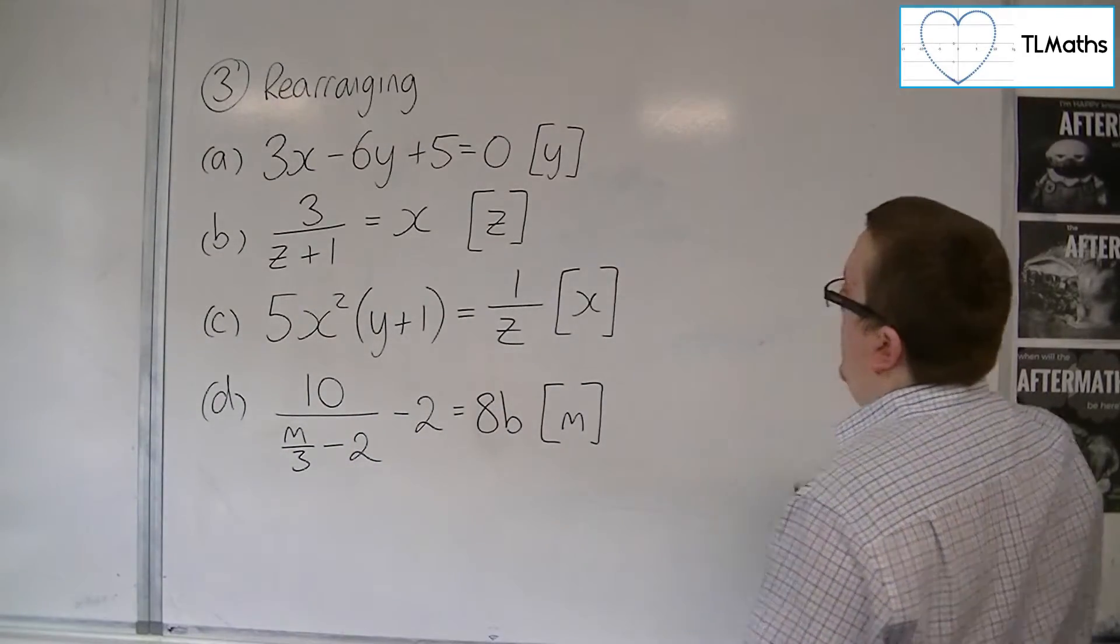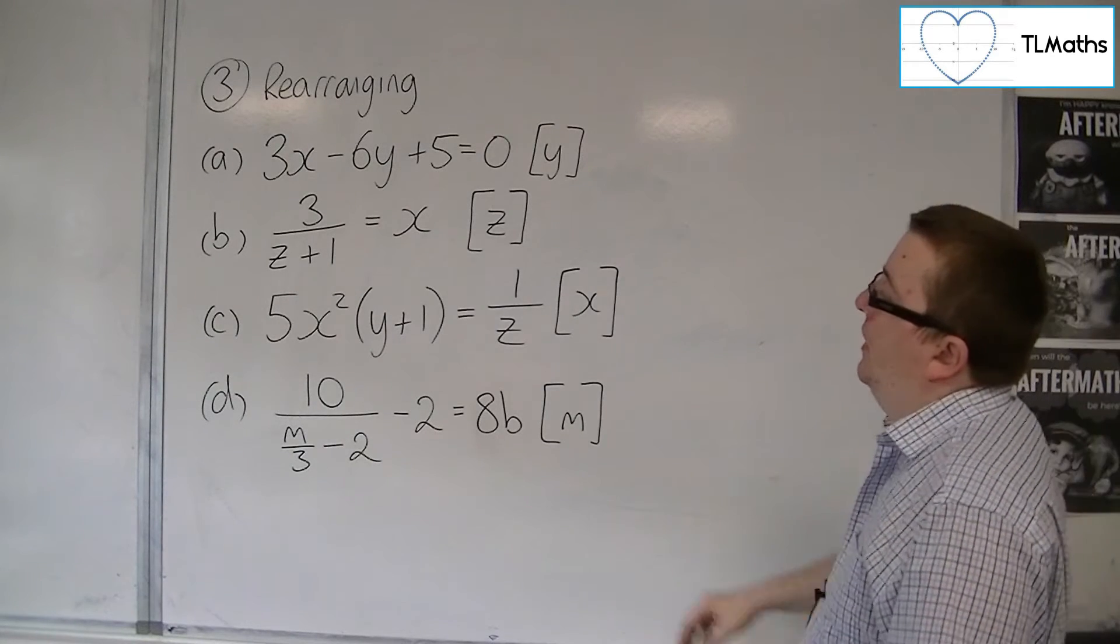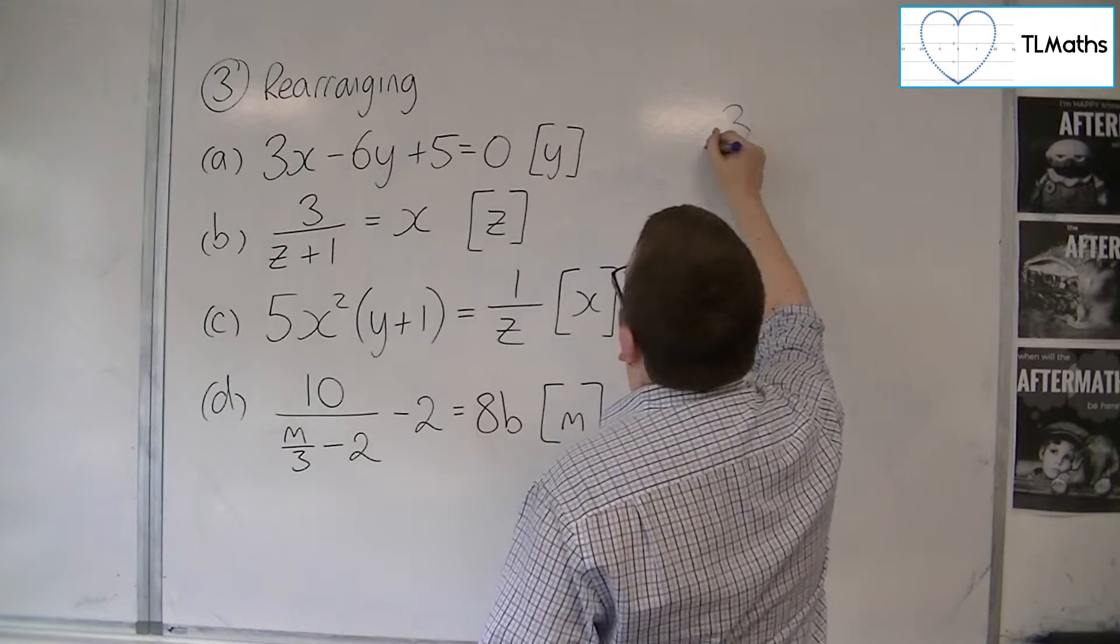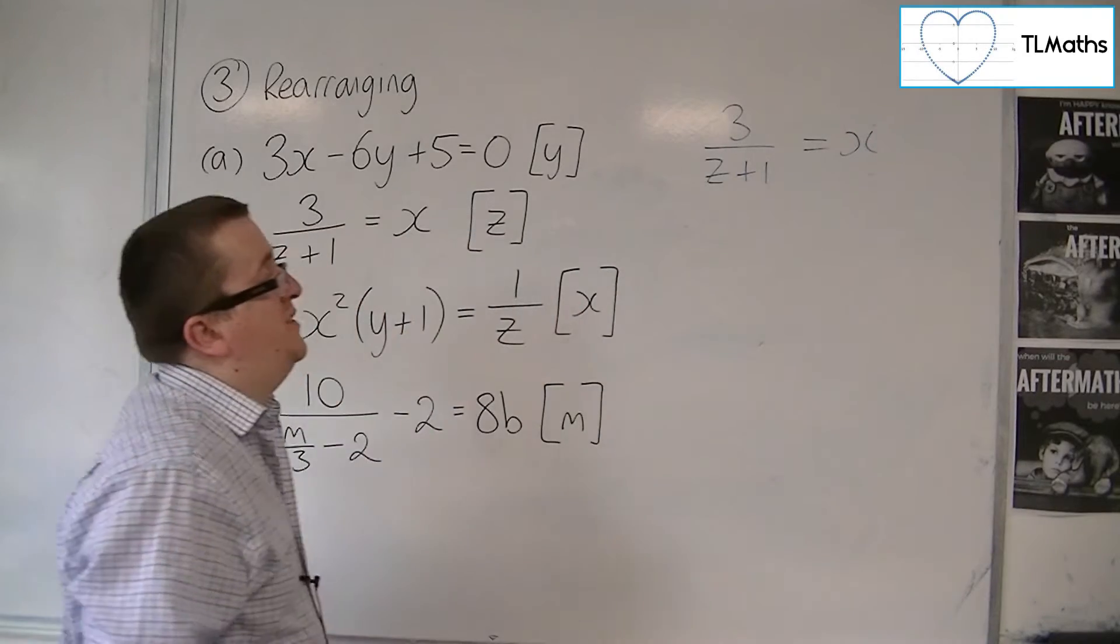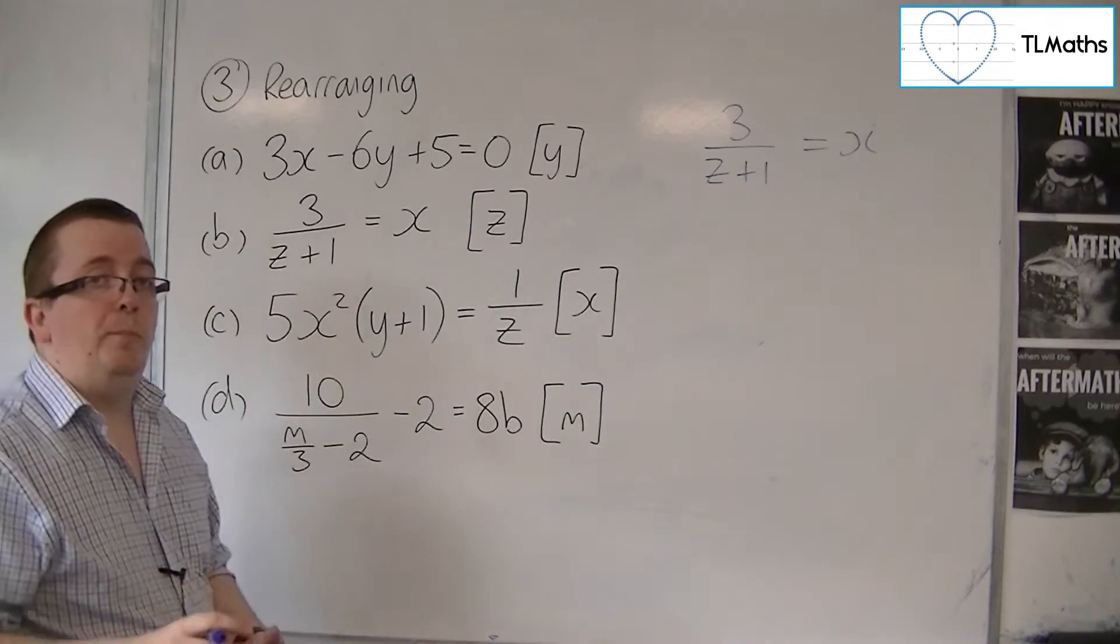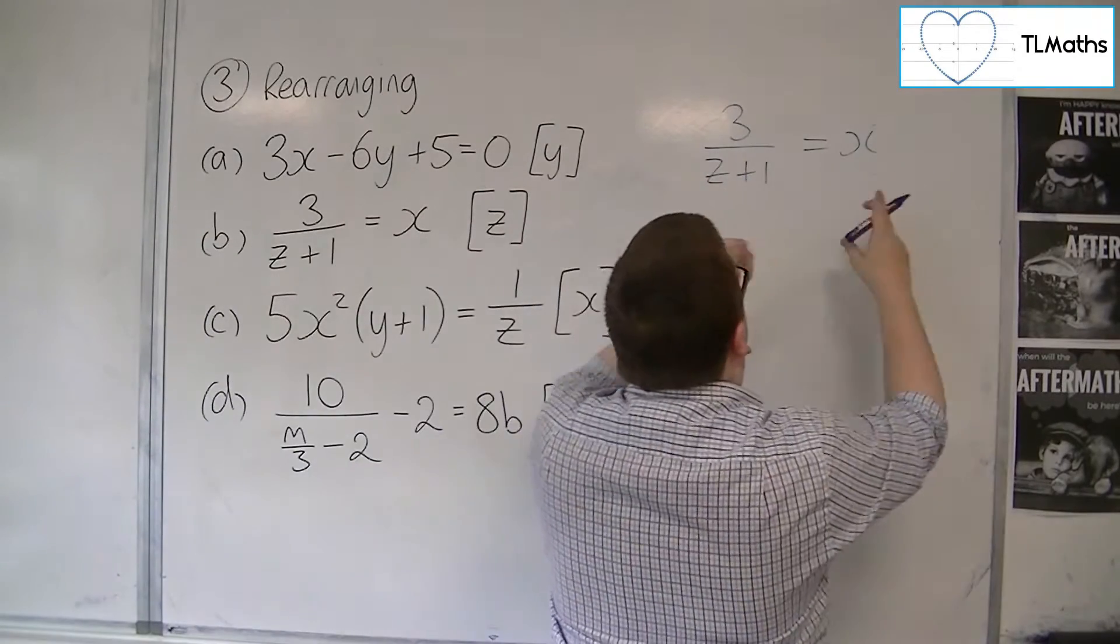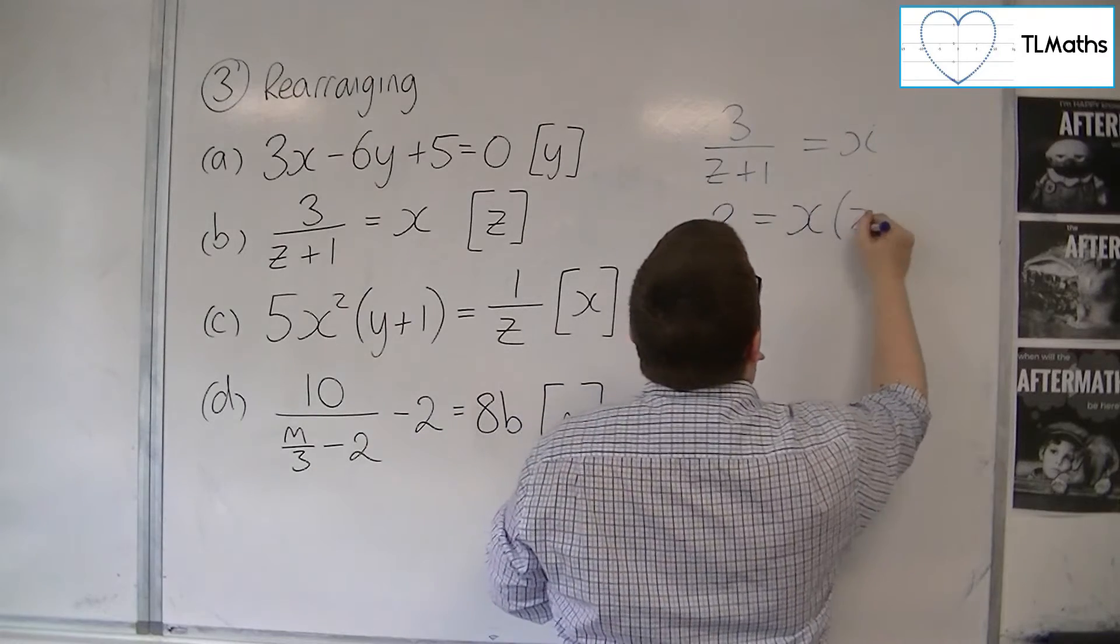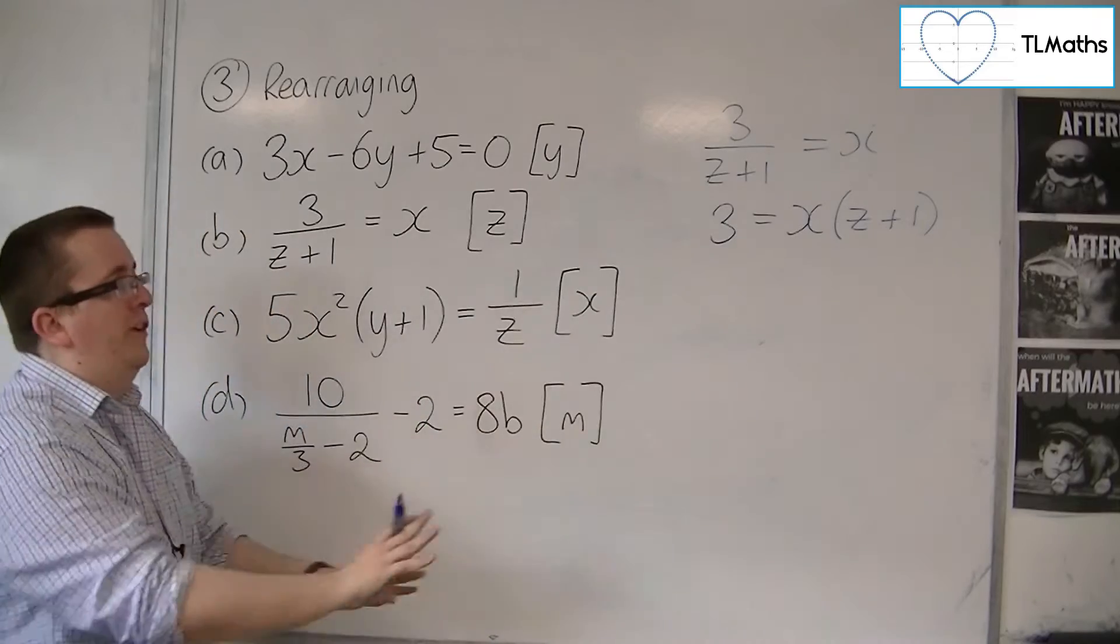So for B, 3 over Z plus 1 is equal to X, and we want to make Z the subject. So we want Z equals. The first step that I would suggest is to multiply both sides by the Z plus 1. So that brings it over to the right-hand side. So we'd have 3 is equal to X lots of Z plus 1.